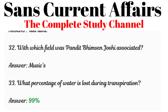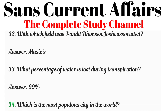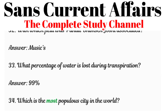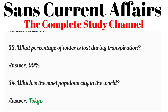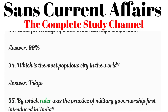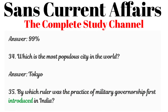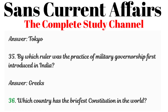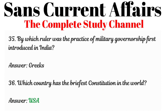Question 33: What percentage of water is lost during transpiration? Answered: 99 percent. Question 34: Which is the most populous city in the world? Answered: Tokyo. Question 35: By which ruler was the practice of military governorship first introduced in India? Answered: Greeks. Question 36: Which country has the briefest constitution in the world? Answered: USA.